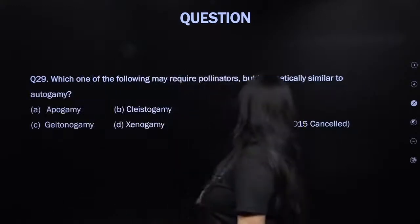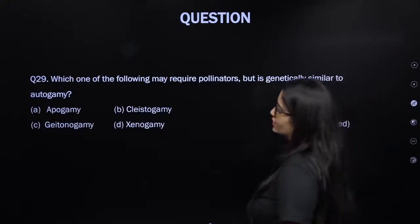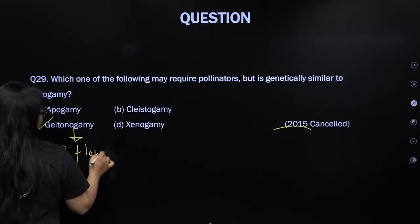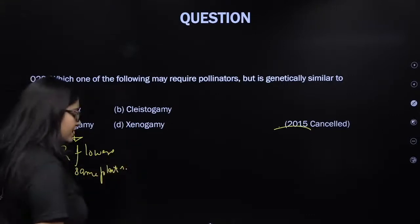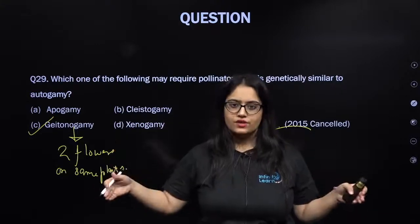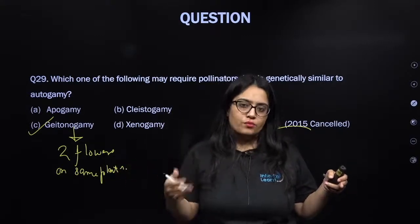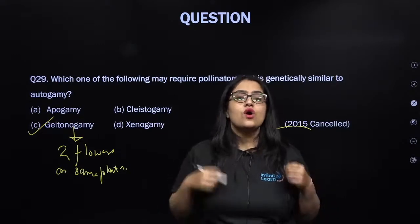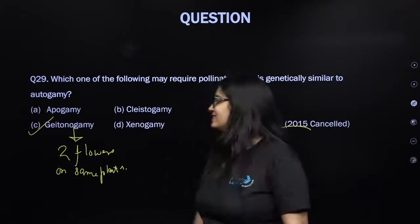From NEET 2015: which type of pollination may require pollinators but is genetically similar to autogamy? It is geitonogamy. Because pollination takes place between two different flowers on the same plant, an agent may be required to transfer pollen from one flower to another. But genetically, it is equivalent to self-pollination because both flowers are part of the same plant — same plant means same genes.